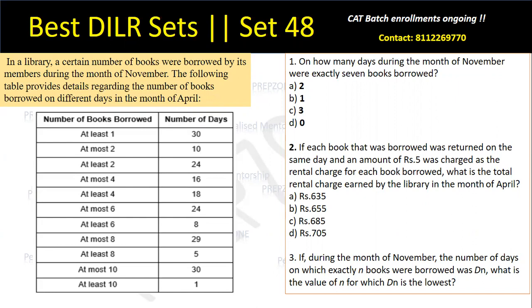Let's get started. The question says: in a library, a certain number of books were borrowed by its members during the month of November — though I think this is a typo and it should be April. The following table provides details regarding the number of books borrowed on different days in the month of April.